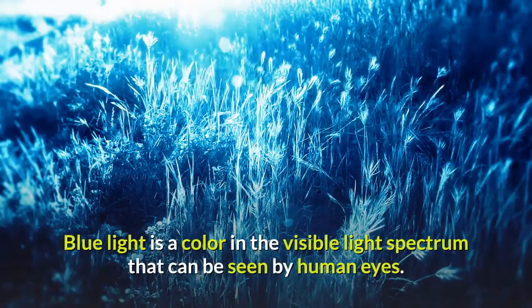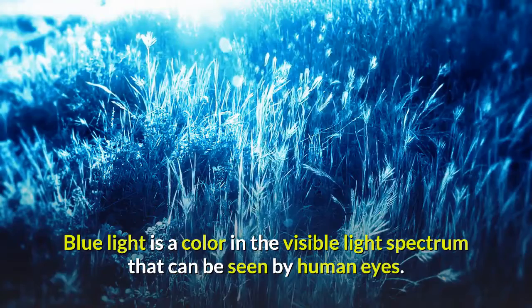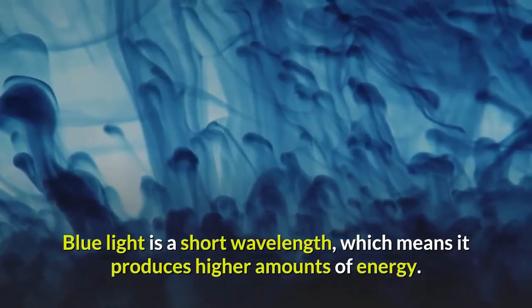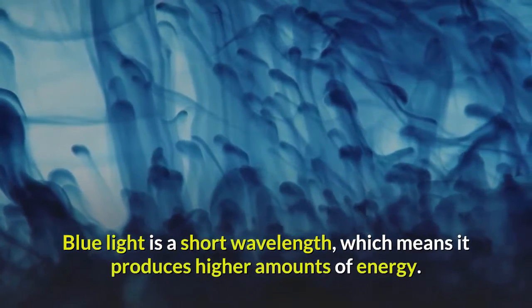Blue light is a color in the visible light spectrum that can be seen by human eyes. Blue light is a short wavelength, which means it produces higher amounts of energy.